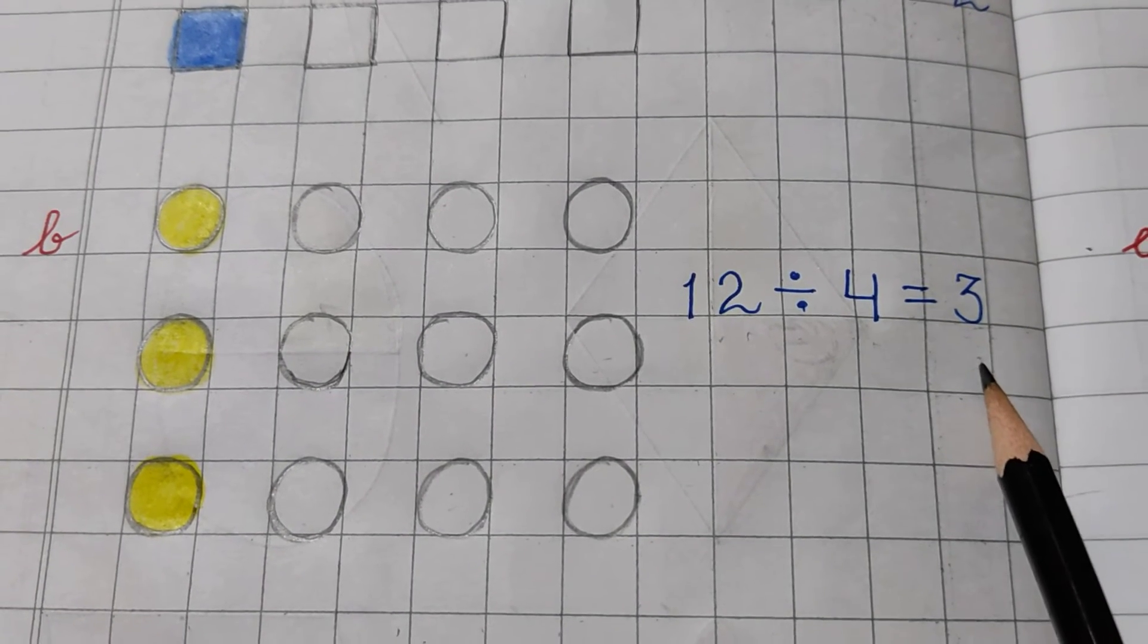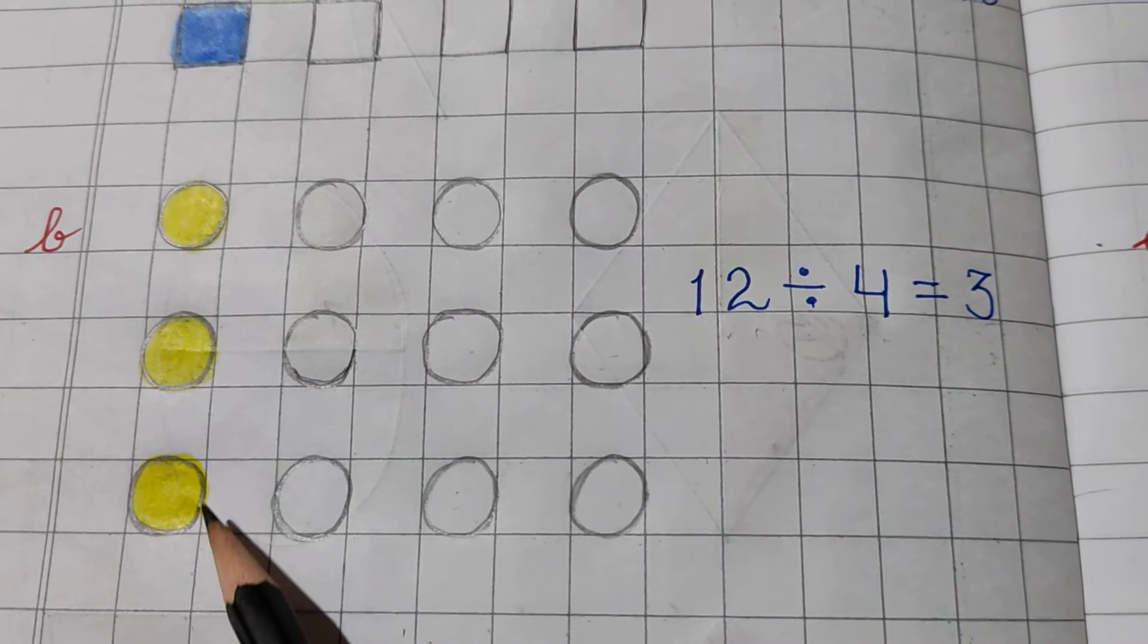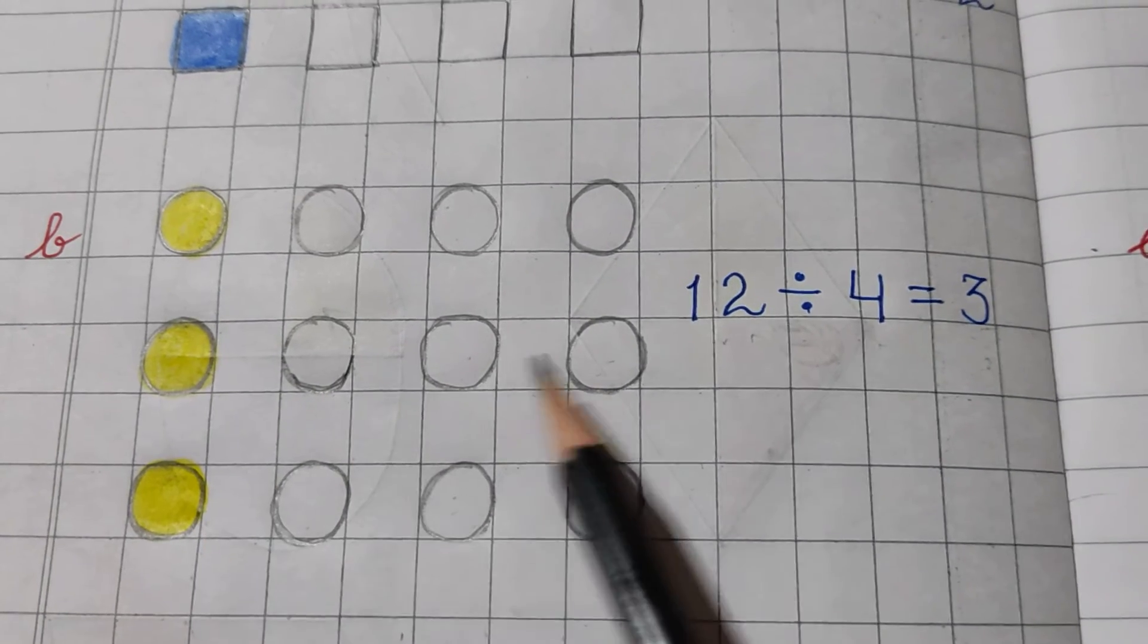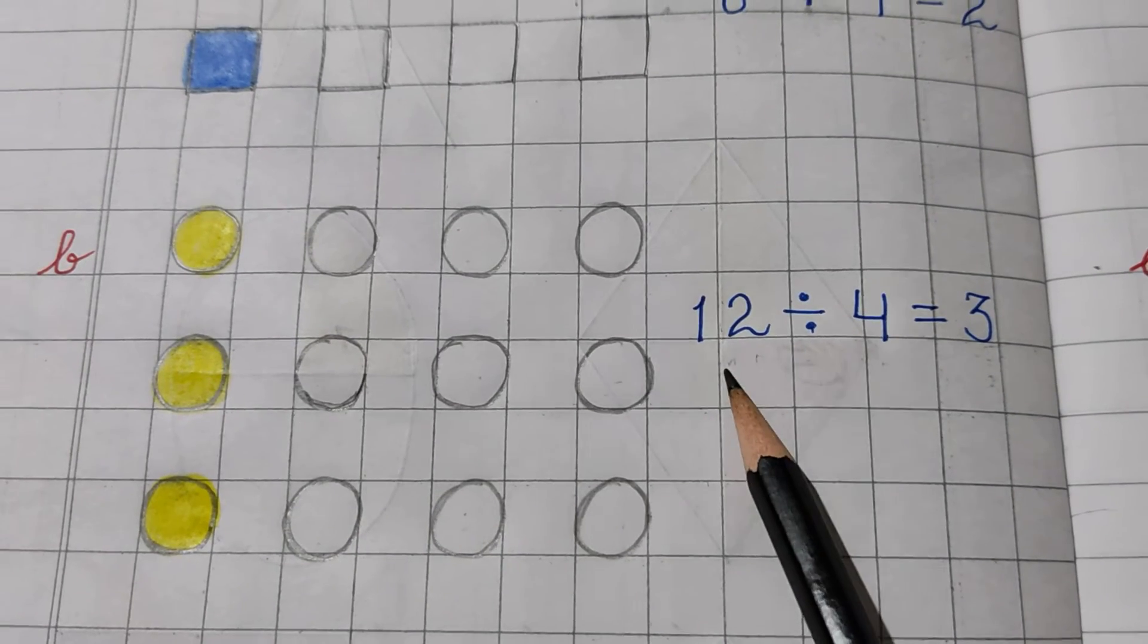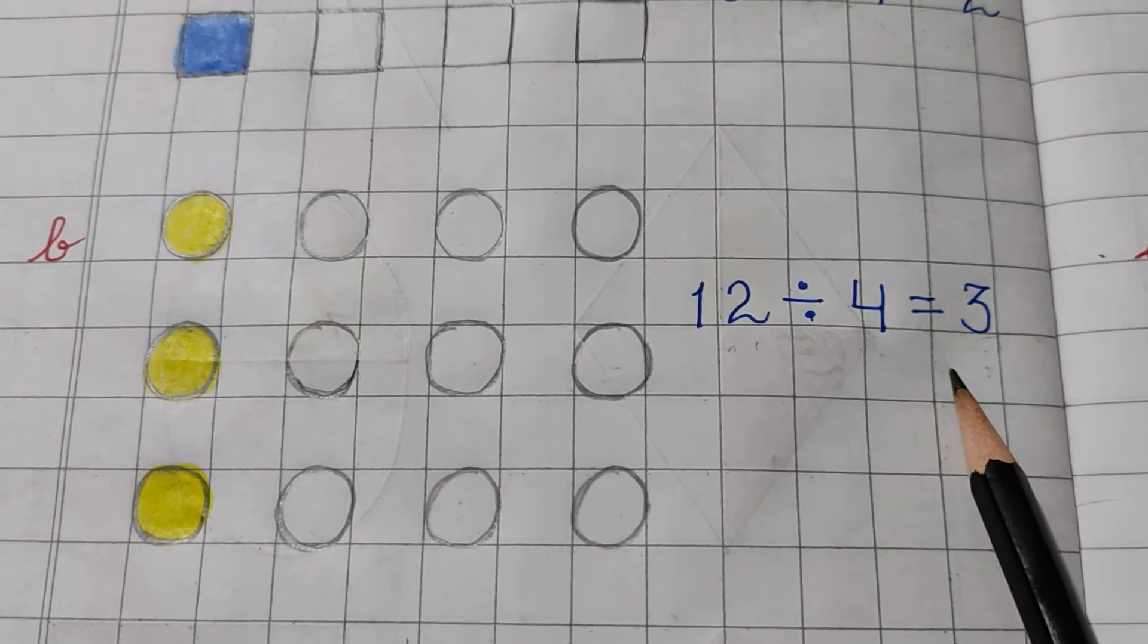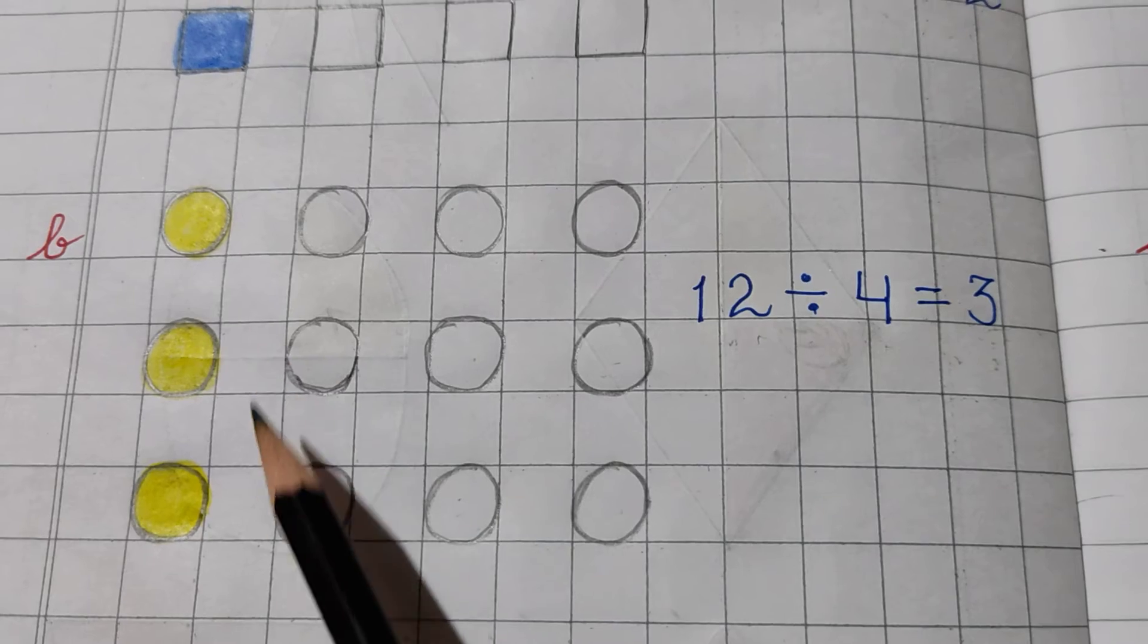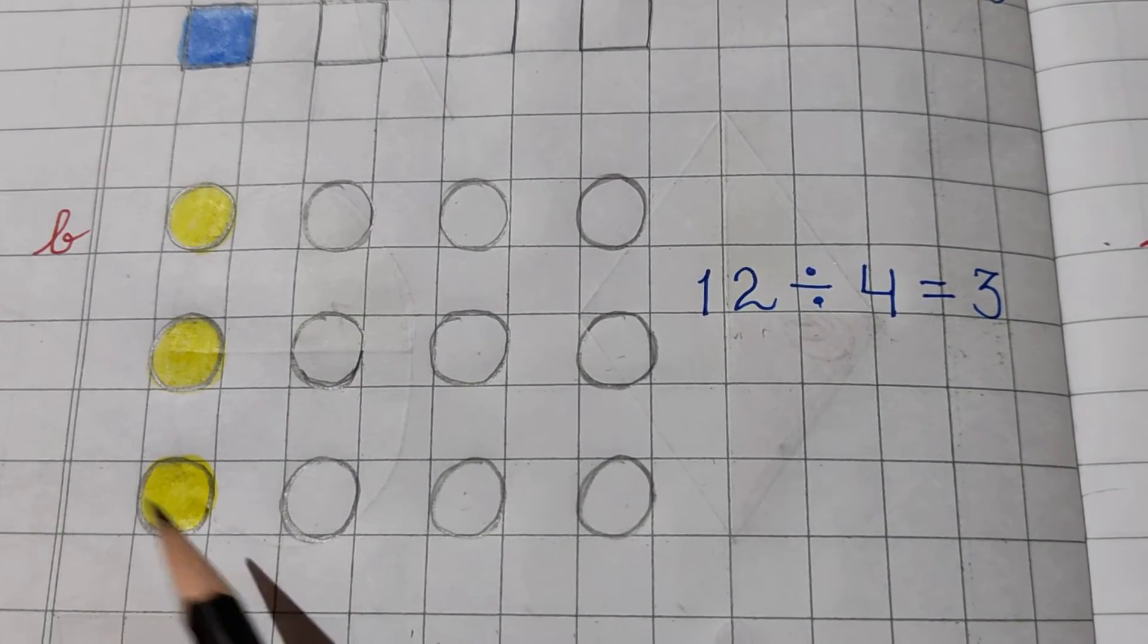So, 3 answer aaya, iska 3 answer aaya, to humay only 3 circles ko hi color karna hai. That means, 3 is the one-fourth of 12. 12 ka one-fourth 3 hota hai. You can see, I have colored 3 circles here.